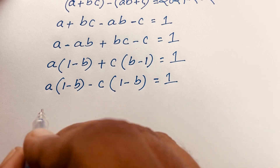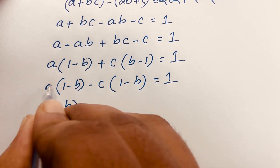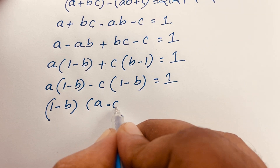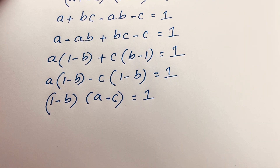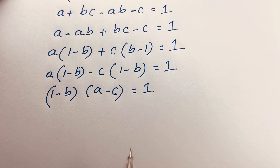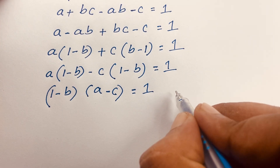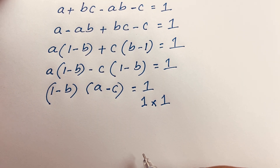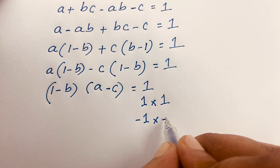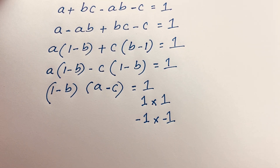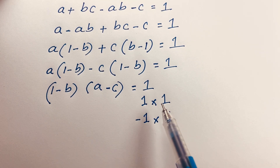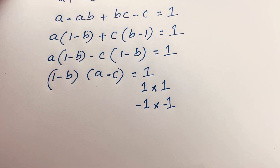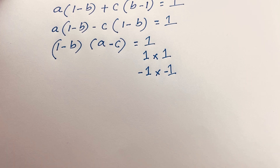So (1 - b) is common, giving (1 - b)(a - c) = 1. We need to find two cases since 1 can be written as 1 times 1, or as (-1) times (-1). So we have two cases: case one gives (1-b)=1 and (a-c)=1; case two gives (1-b)=-1 and (a-c)=-1.